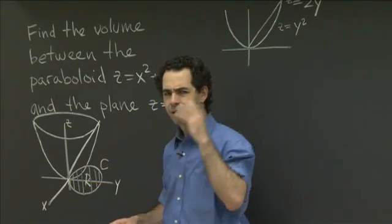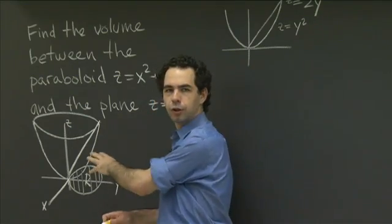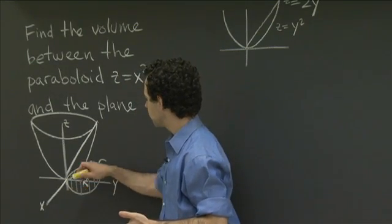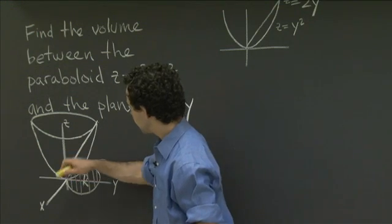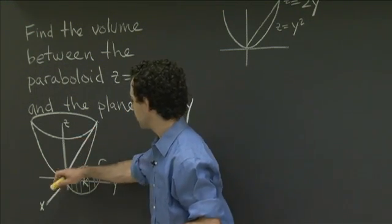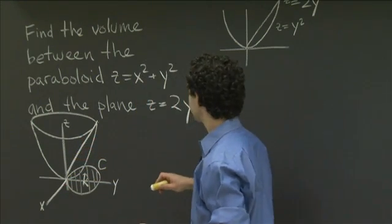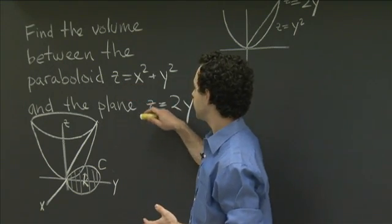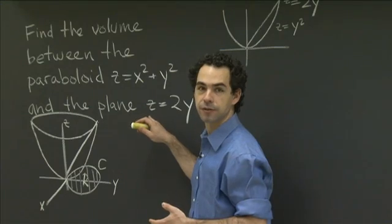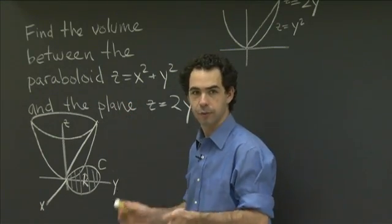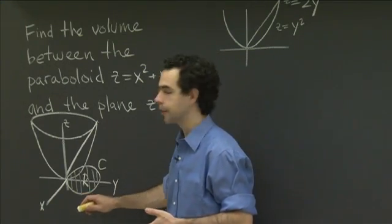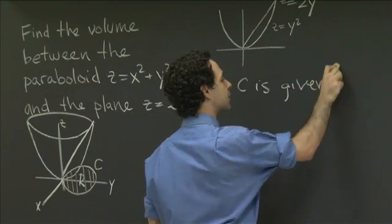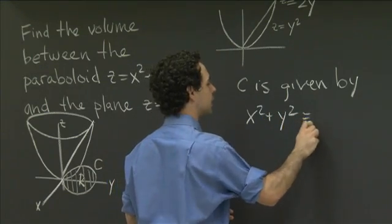So what we need to figure out is what is this region R? This is tough to do by intuitive reasoning alone, so we're forced to use some algebra. C is what we get — it's the projection downwards of the curve of intersection of this plane with this paraboloid. That means it's what we get if we solve for z in one of the two surface equations and plug it into the other, giving us an equation with just x and y. In our case, C is given by x squared plus y squared equals 2y.